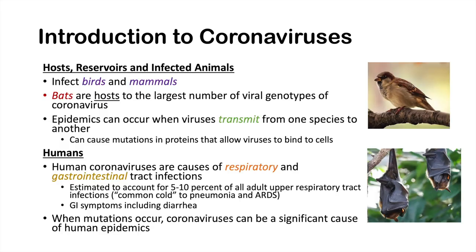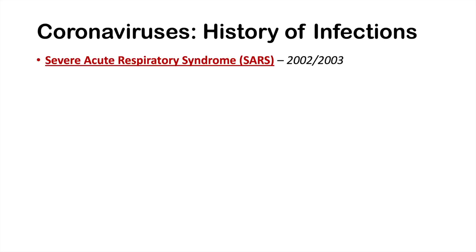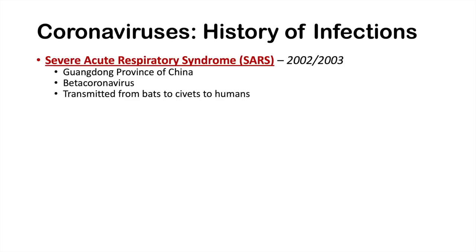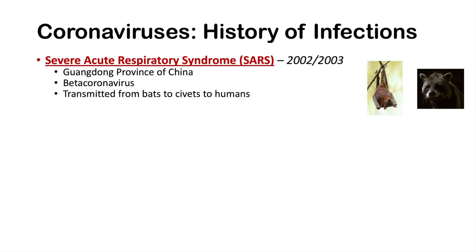The first major recent outbreak is Severe Acute Respiratory Syndrome, or SARS, which occurred in 2002 to 2003. It appears to have started in Guangdong province of China and is a lineage B beta coronavirus. SARS was transmitted from bats to civets to humans. The worldwide outbreak was recorded as early as February 2003 and lasted until July 2003, with more than 8,000 total recorded cases and 774 deaths — a fatality rate of 9.6%.